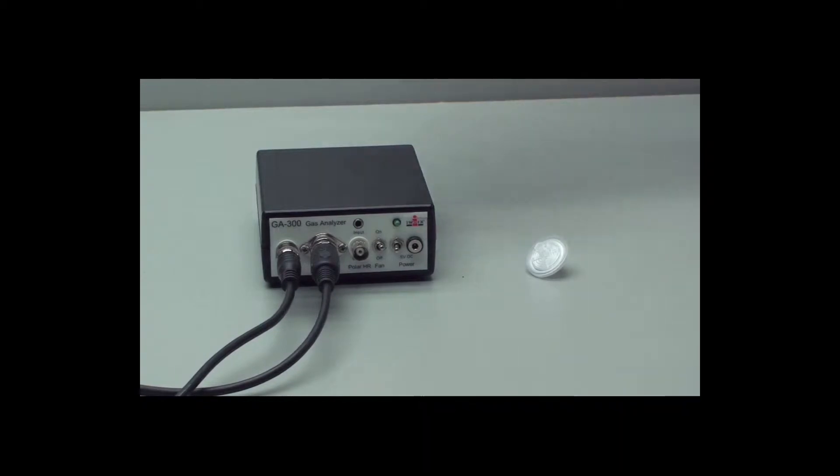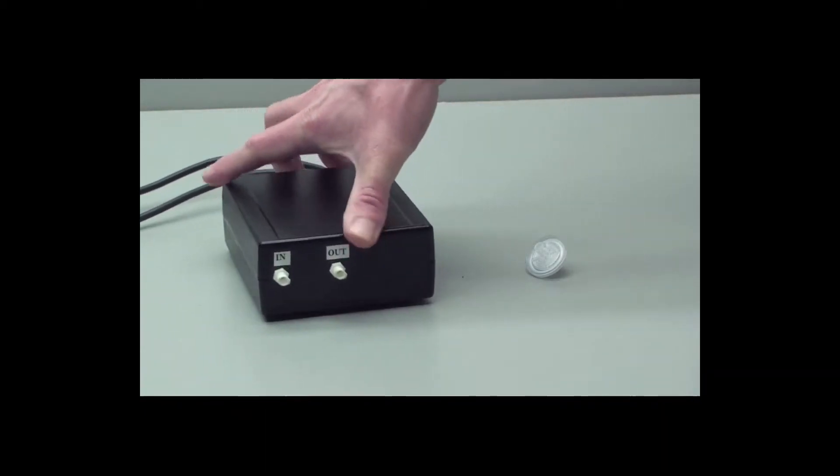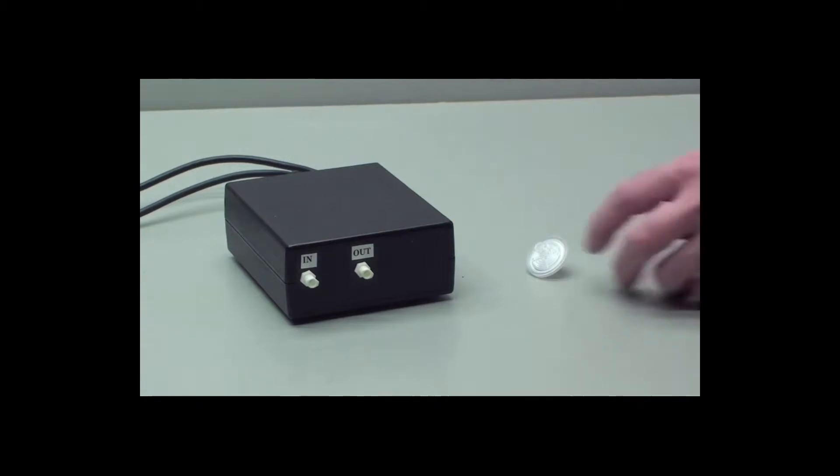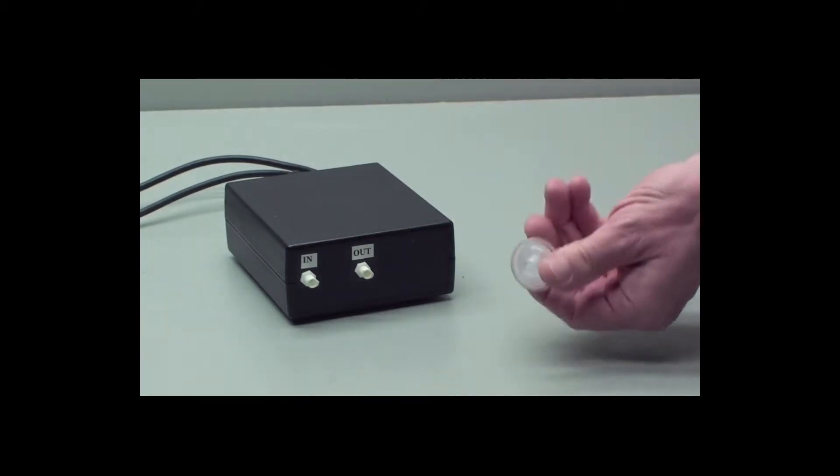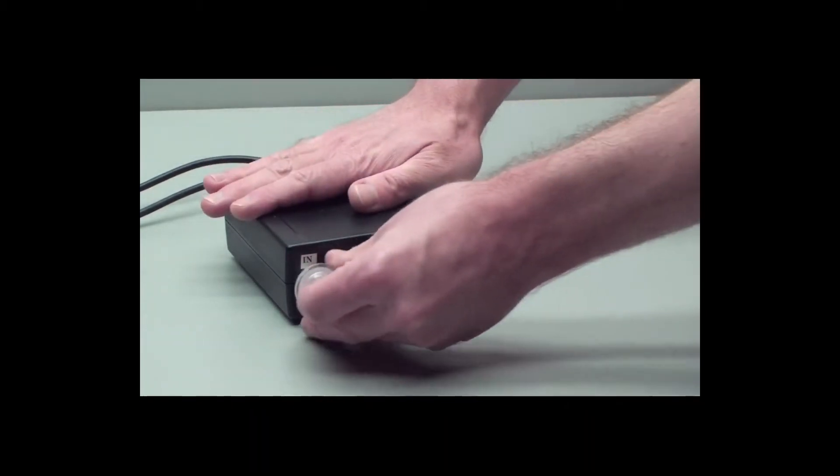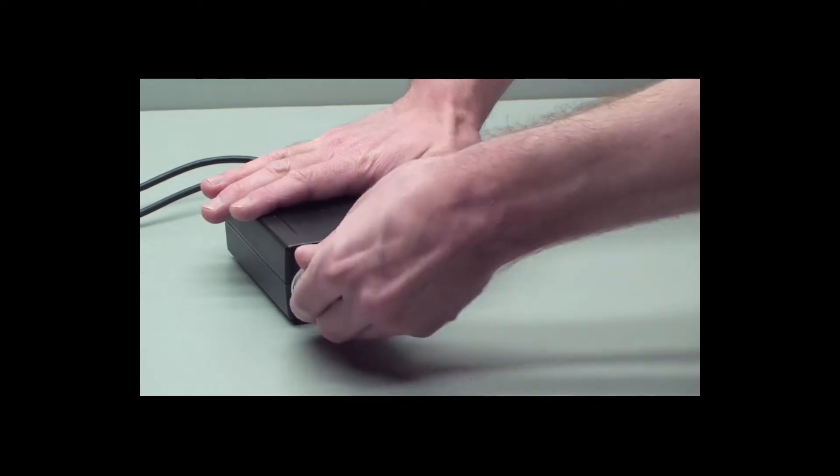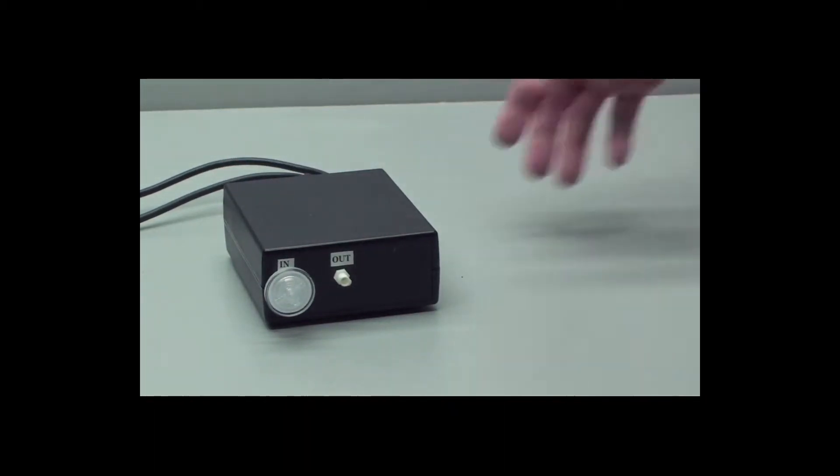Go to the back side of the gas analyzer, and for the filter, take the lure end, and that goes into the inlet of the gas analyzer. Don't over tighten, snugly is fine.